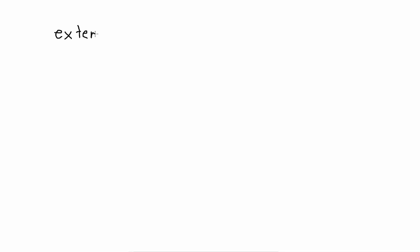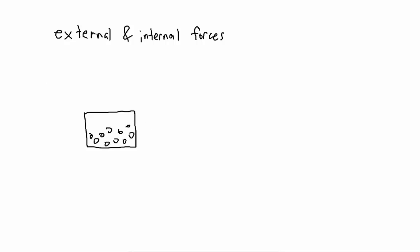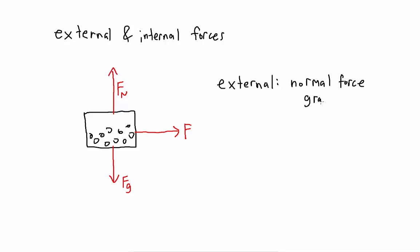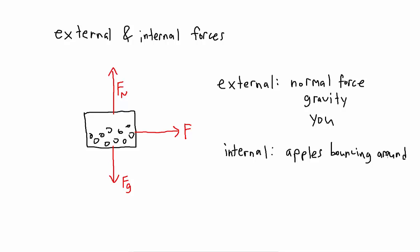Another concept is external and internal forces. Say we have a system — any external forces are going to be exerted by objects outside the system, and internal forces are forces that come from inside. For example, say we have a box filled with apples. The external forces on this box of apples include: the force you exert pushing the box, gravity, and the normal force exerted by the floor. All the apples bouncing around inside the box exert forces on the walls and on each other, but those are internal forces because they're inside the system.